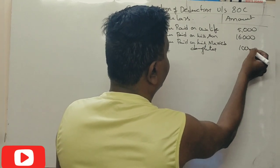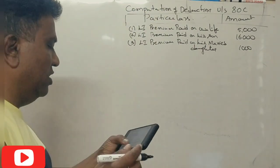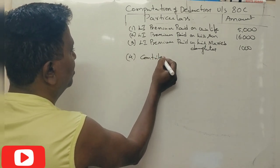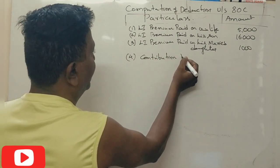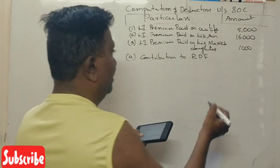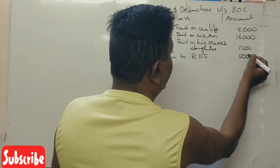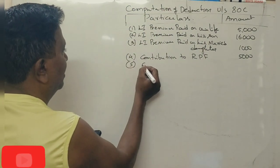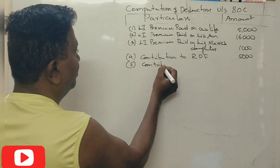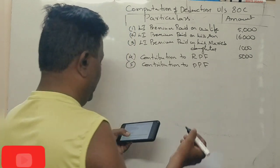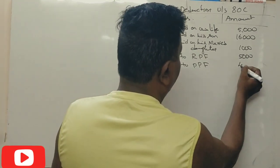Next, contribution to RPF. Contribution to RPF, this is the full eligibility, so 5,000 rupees. Contribution to PPF. Contribution to PPF, this is the full eligibility.